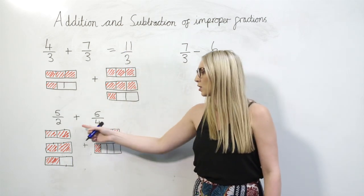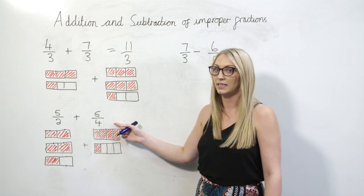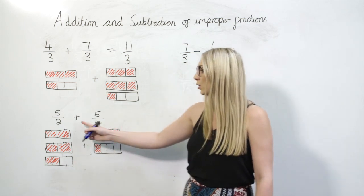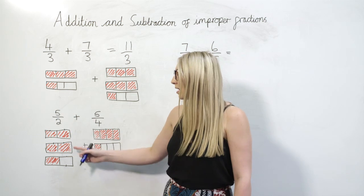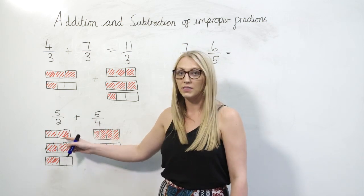In this example the denominators are different but they're related so we simply need to find an equivalent fraction that has a denominator of four. To do this I'm going to split my halves into quarters.